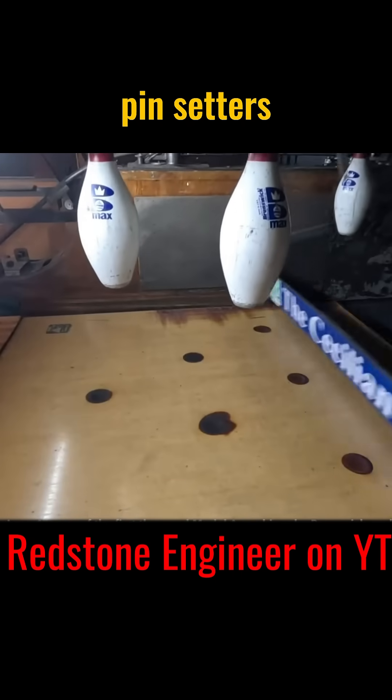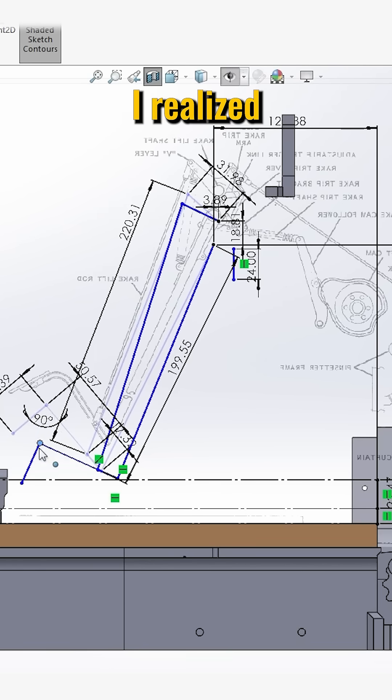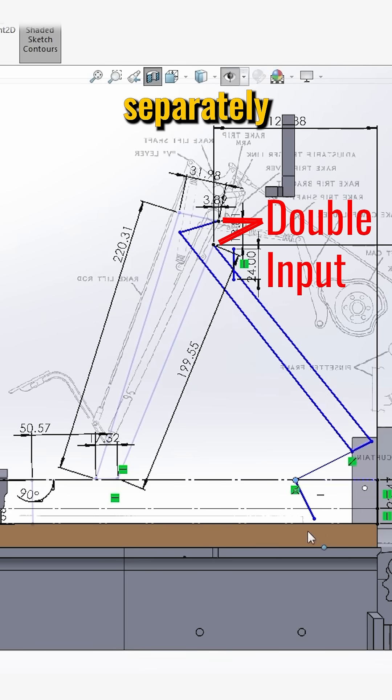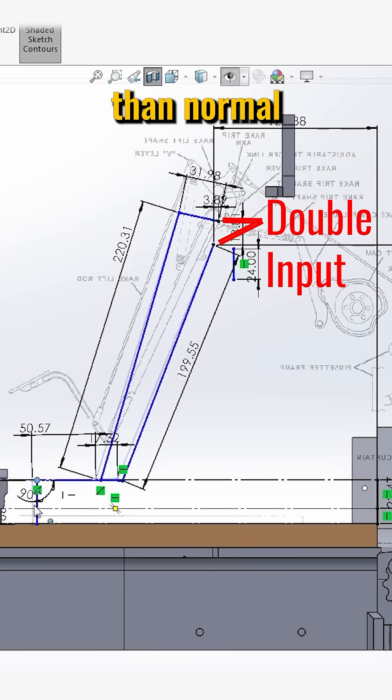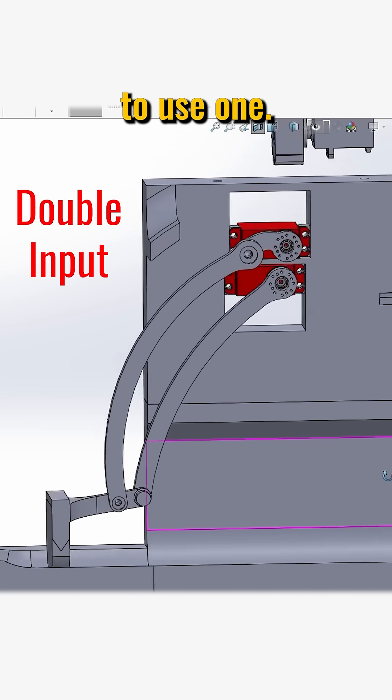So I looked at how real-life bowling pin setters do it and drew the design in Solidworks. But after doing this, I realized the system that drives the existing design moves two input shafts separately to achieve a wider than normal range of motion, which for my design would mean two motors per side, and really, I only want to use one.